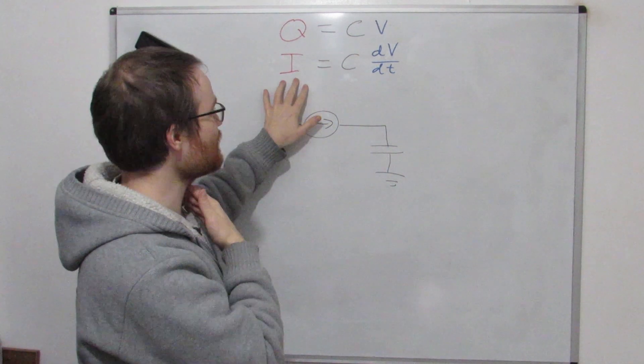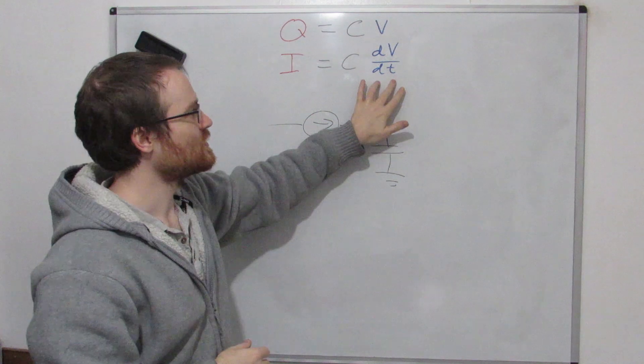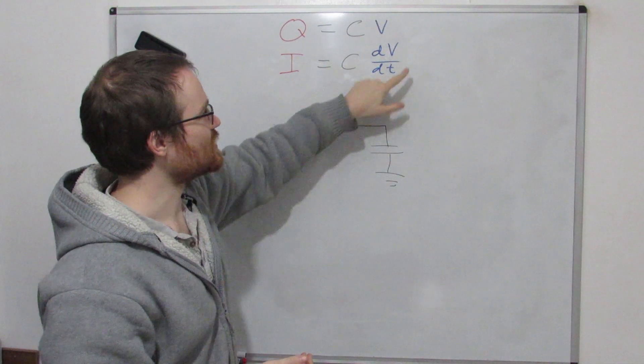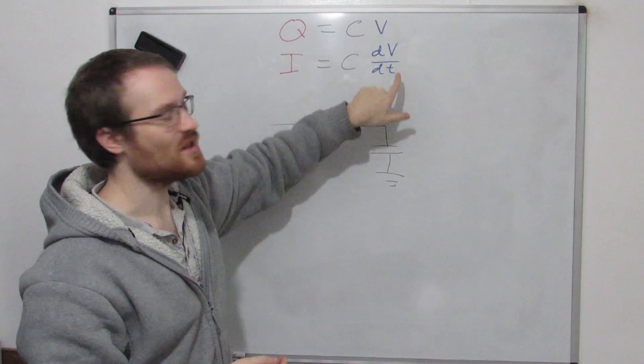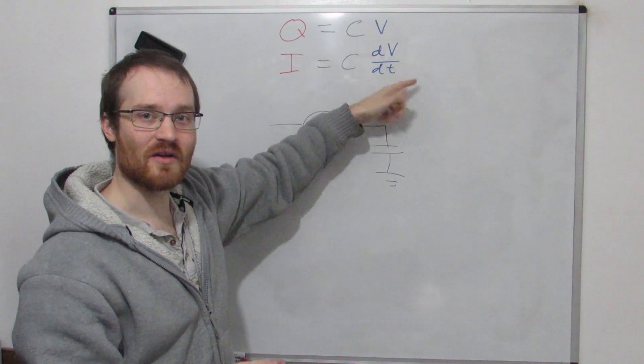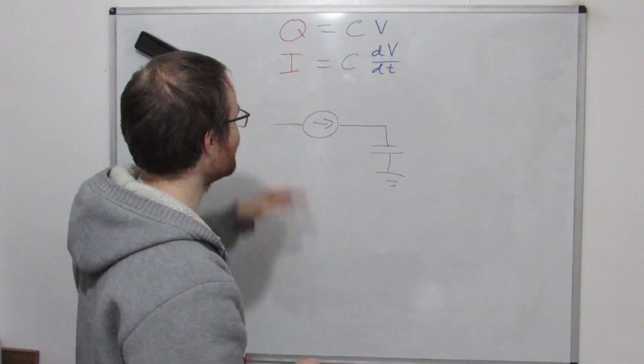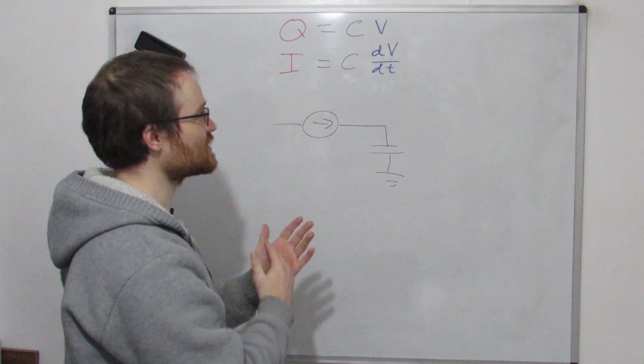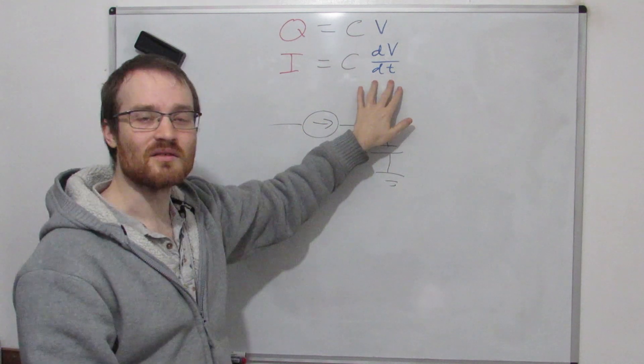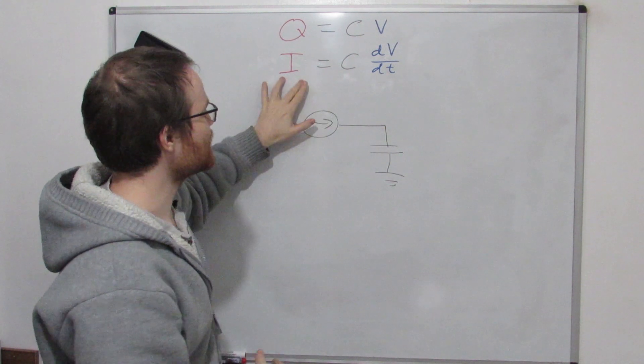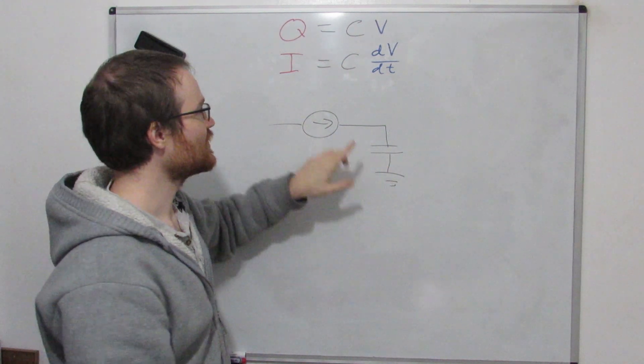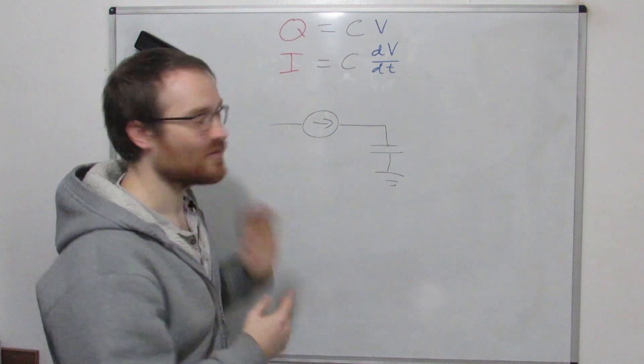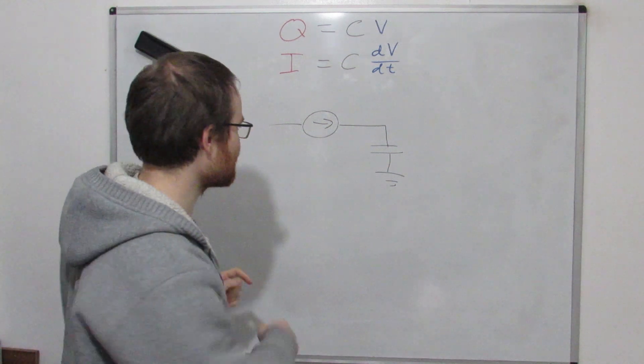Either the current is going to tell us how the voltage is changing with time. If there's lots of current, this voltage changing thingy is going to be very high, which means the voltage is going to change very quickly. If there's not much current, the voltage is going to change very slowly. Vice versa, if the voltage is changing very quickly, then that's going to mean there's lots of current flowing through the capacitor. Conversely, when the voltage isn't changing very quickly, there's going to be not very much current flowing through a capacitor.